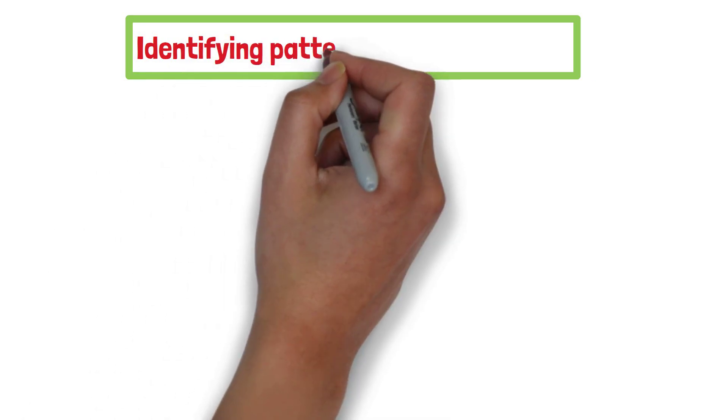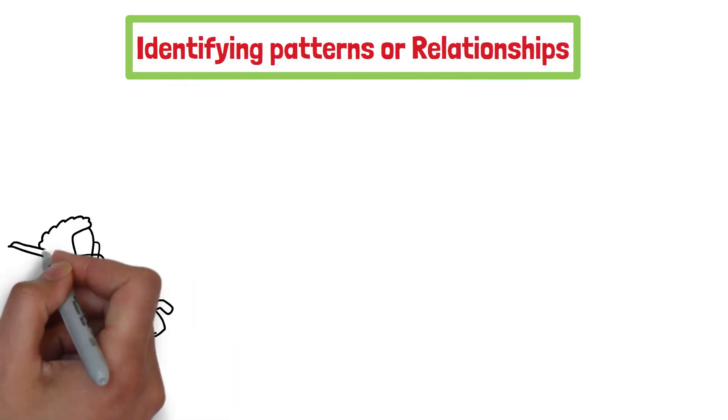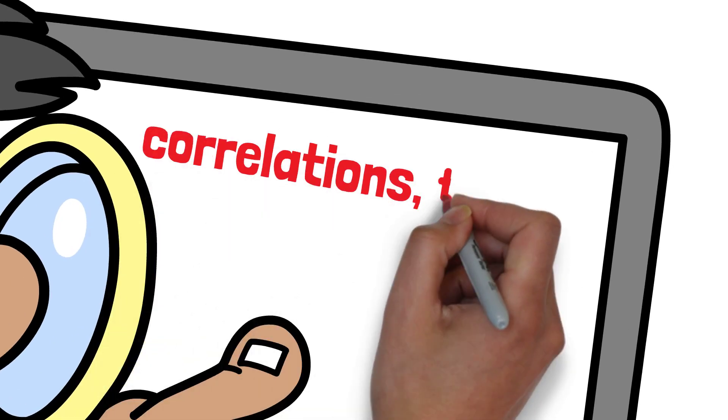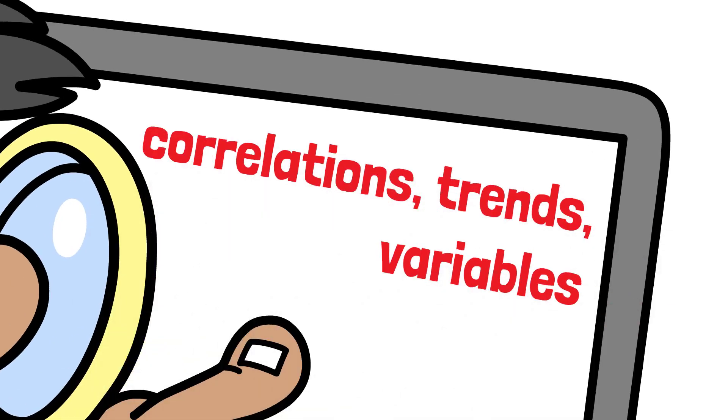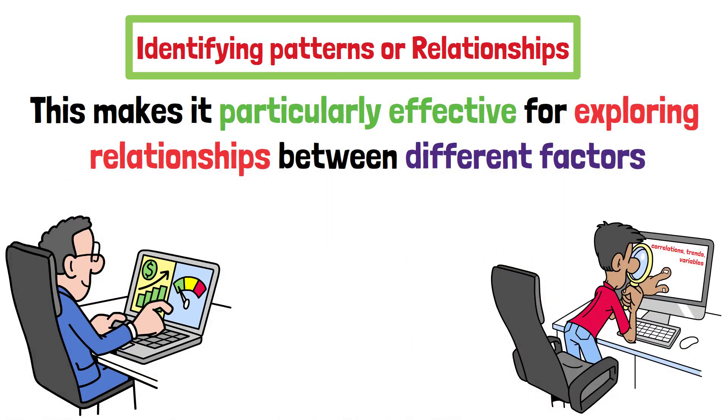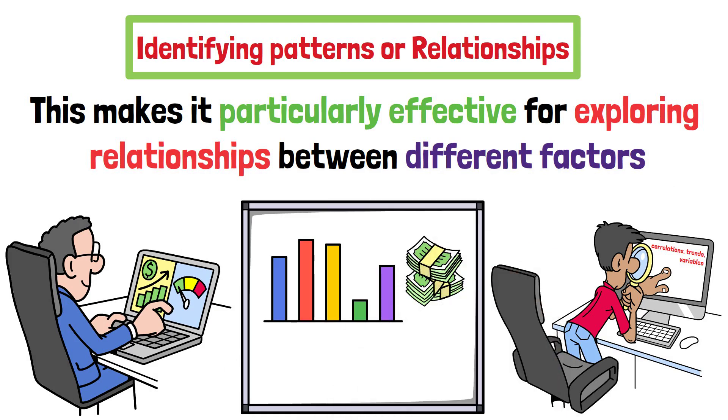Fourth, identifying patterns or relationships. With the help of statistical tools, researchers can quickly identify correlations, trends and differences between variables. This makes it particularly effective for exploring relationships between different factors, such as income levels and education outcomes.